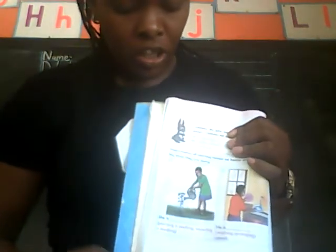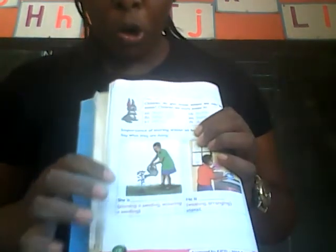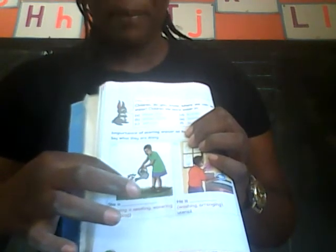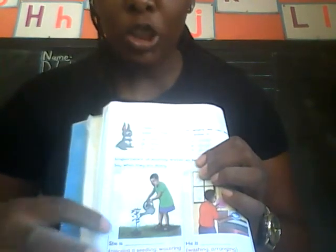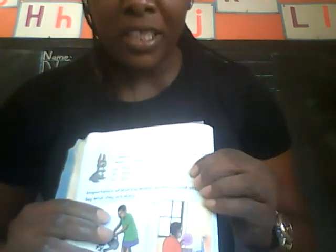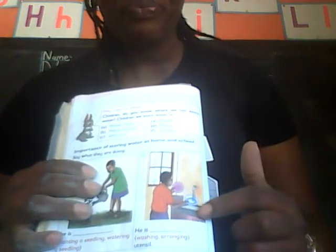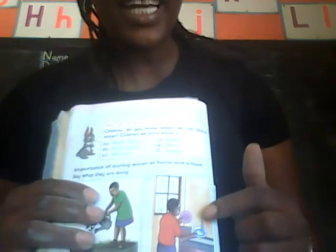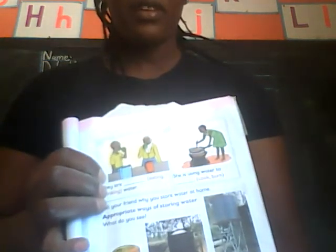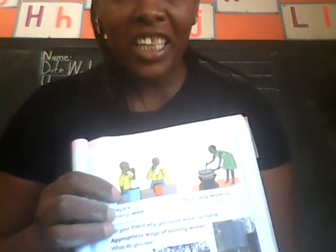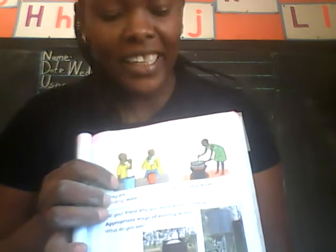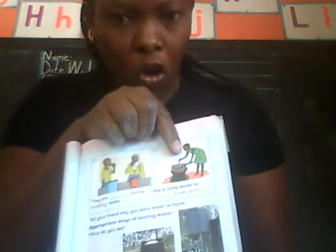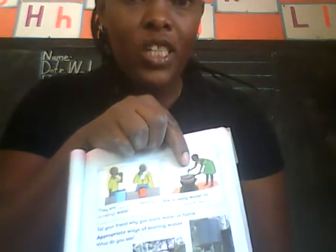Look at this girl here — she is using water to water her plant because there is no rain, and the plant needs to grow. And there is this boy here who is cleaning the dishes using water. These ones — what are they doing? They are drinking water. And there is mommy here — she is cooking and using water to cook.